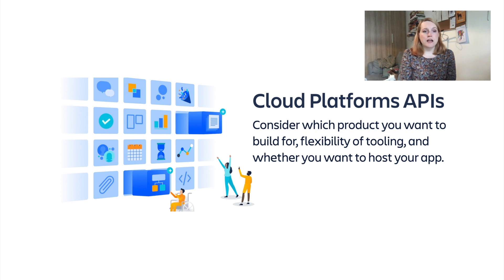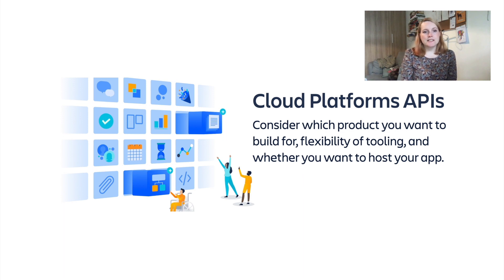So how do you choose which cloud platform API is best for you? If you want to build for Trello, you'll need to build on the power-ups platform. If you're considering building a Confluence or Jira app, Atlassian Connect and Forge will both continue to be offered as platforms to build Atlassian Cloud apps on. If you want the flexibility of being able to build your app using whatever tools you want, then Connect is a great mature platform to use. However, if you're not too concerned about what tools you're using and don't want to worry about hosting your app, then Forge could be the perfect fit for you.